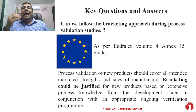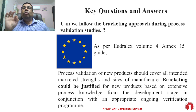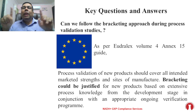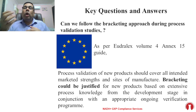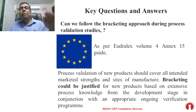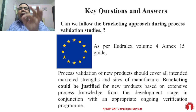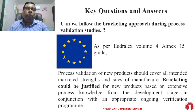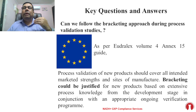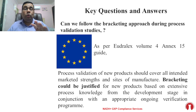Now let us move to the third question: can we follow the bracketing approach during process validation studies? Again, the answer is yes, as per EU GMP Volume 4 Annex 15. Process validation of a new product should cover all intended marketed strengths and sites of manufacture. Bracketing could be justified for new products based on extensive process knowledge from the development stage, in conjunction with an appropriate ongoing verification program. PICS guideline has the same expectation.